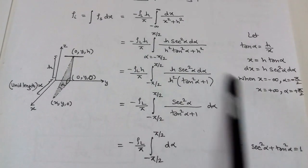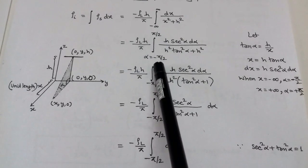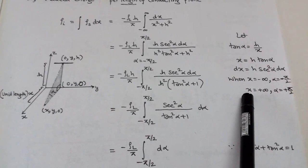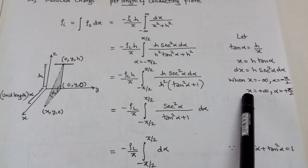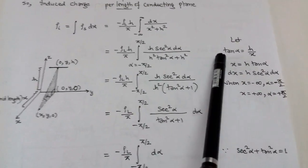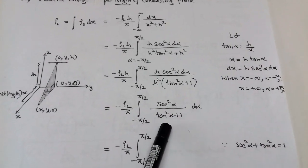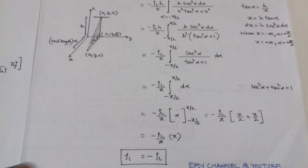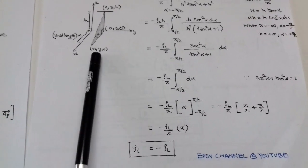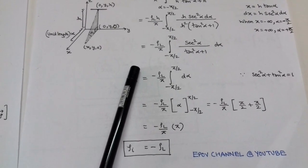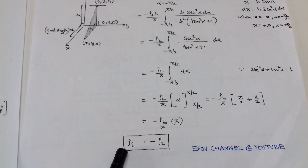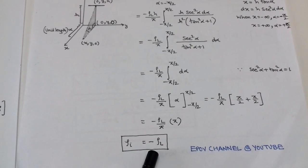The limits of x are changed to alpha limits. When x equals minus infinity, alpha equals minus pi/2, and when x equals plus infinity, alpha equals plus pi/2. Here alpha equals tan_inverse(h/x). After putting these values and evaluating the integration with respect to alpha, we find that the induced charge per unit length in the x-direction equals minus rho_L.